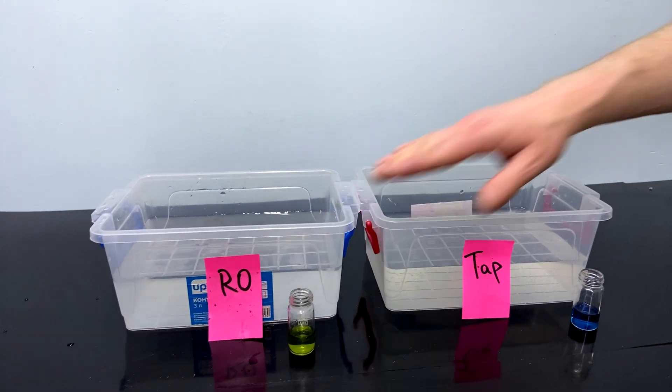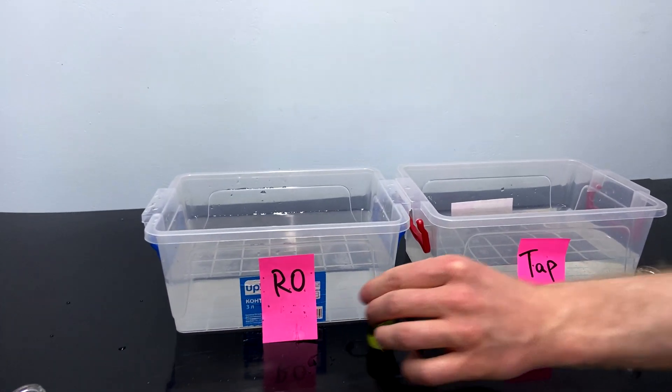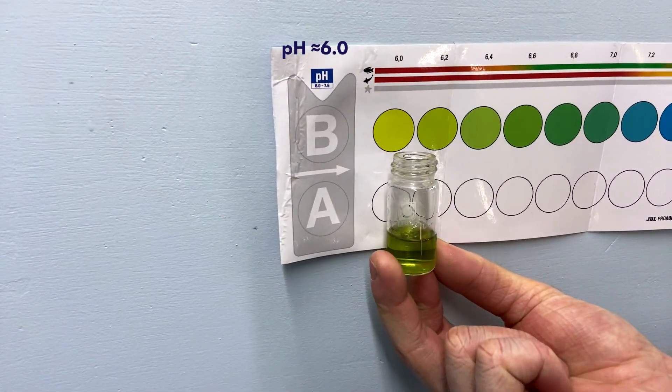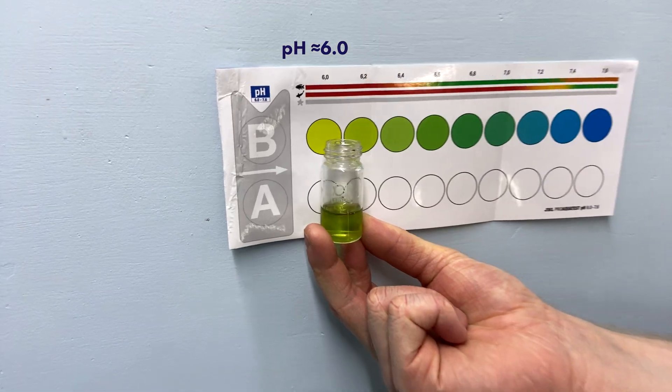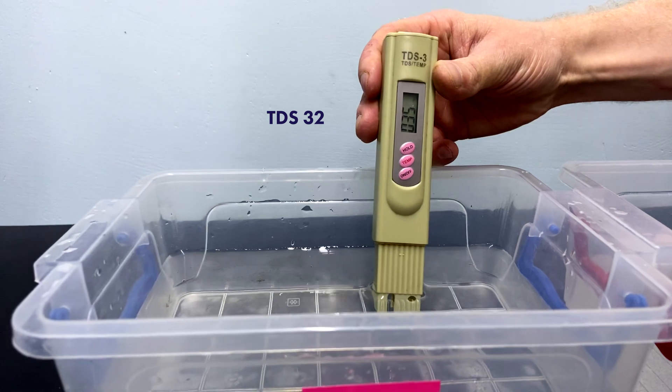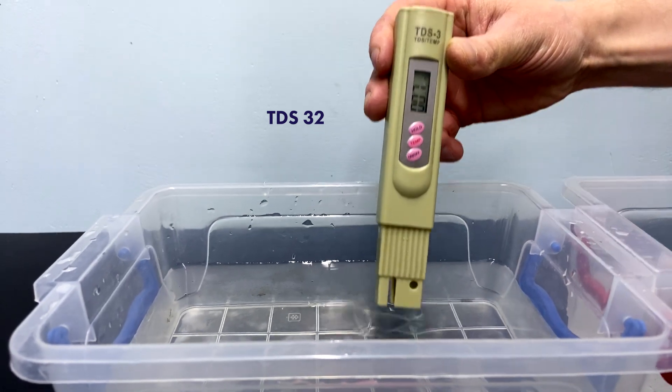In this tank, there is RO water. As you can see, its pH is about 6. Let's check TDS. It's 32 ppm.